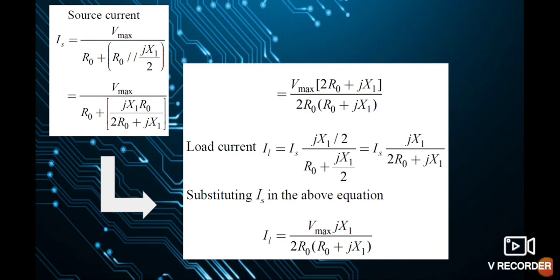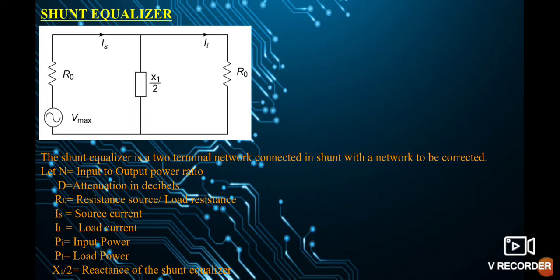Rearranging the parallel connection into proper form gives Is = Vmax·(2R0 + jX1) / (2R0·(R0 + jX1)). Using the current divider rule, the load current IL equals the source current multiplied by the opposite branch reactance jX1/2, divided by the sum of the two impedances in that branch, which are R0 and jX1/2, giving IL = Is · jX1 / (2R0 + jX1).